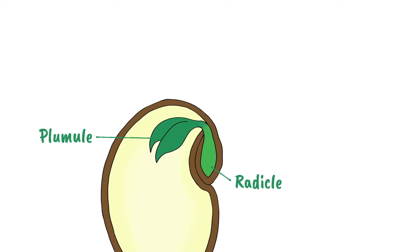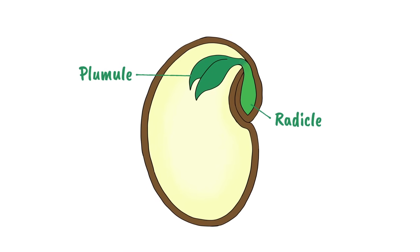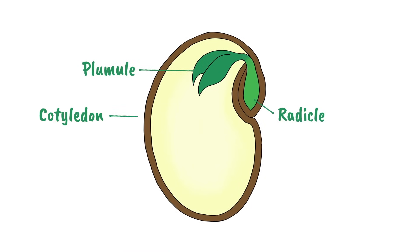The remaining contents of the ovule develop into cotyledons, which act as a food store for the new plant. Seeds need their own food store for the earliest stage of growth because no food is produced by photosynthesis until leaves develop.